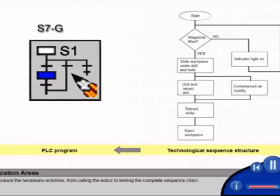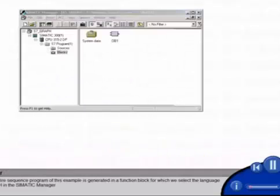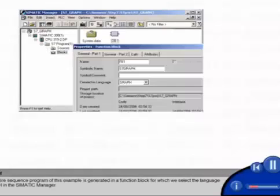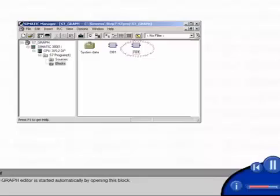We introduce the necessary activities from calling the editor to testing the complete sequence chain. The entire sequence program of this example is generated in a function block for which we select the language graph in the SIMATIC manager. The S7 graph editor is started automatically by opening this block.